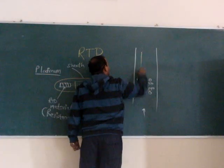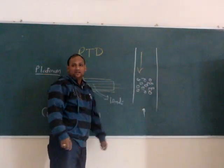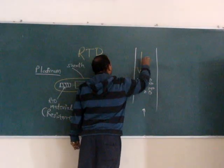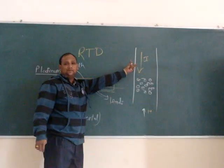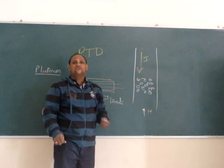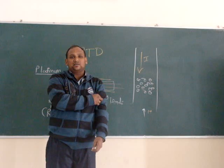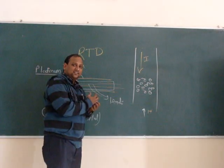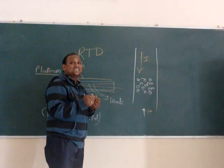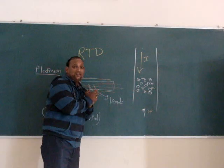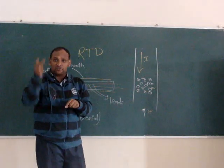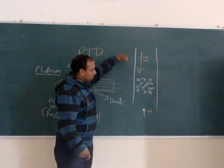And at one position, when you are passing a current movement, at that point that current will feel a resistance. Means how much amount of heat is generated, how much amount of heat is given to this metal, that much amount of resistance will develop for the passing of that current.